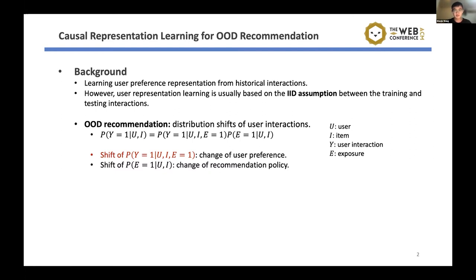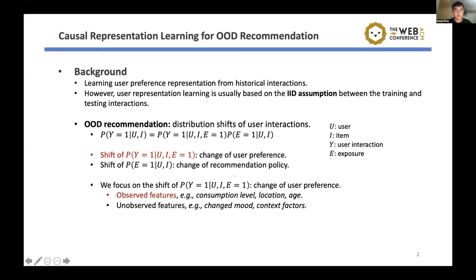Previous research work mainly focused on the second direction — pursuing fairness-oriented or debiasing recommendation methods. In this work, we focus on the change of user preference. We assume that user preference is decided by some user features, either observed or unobserved. For example, our preference over some price can be decided by our income, age, and other factors. As an initial work, we only focus on the user preference shift caused by observed features such as consumption level, location, age, and income. The shift caused by unobserved features is left as future work.